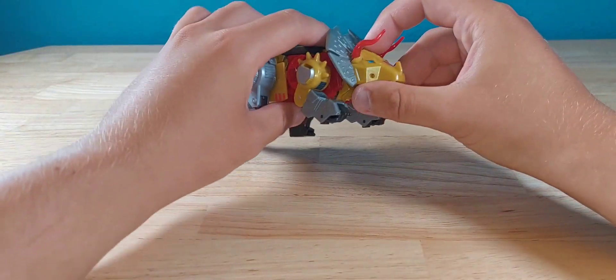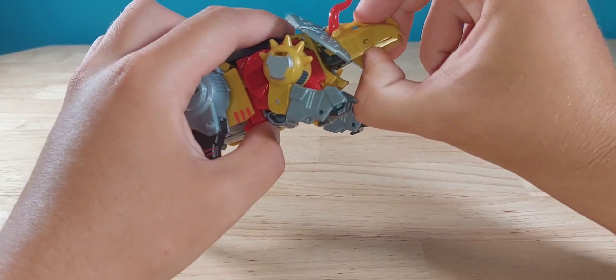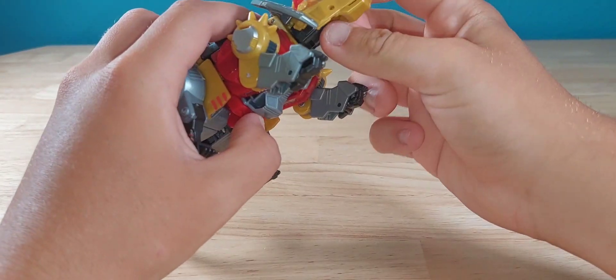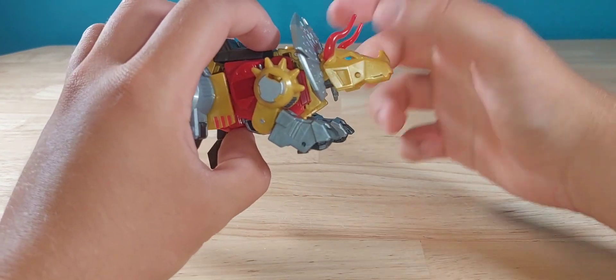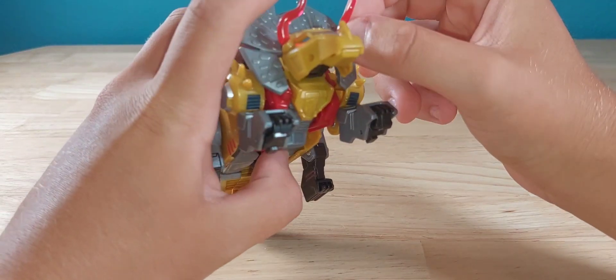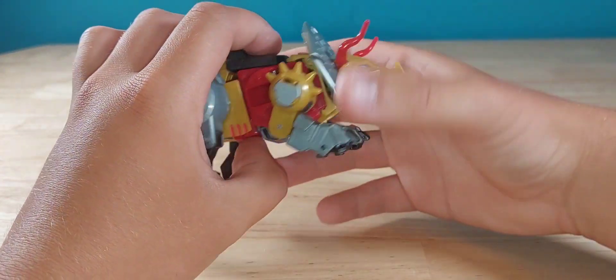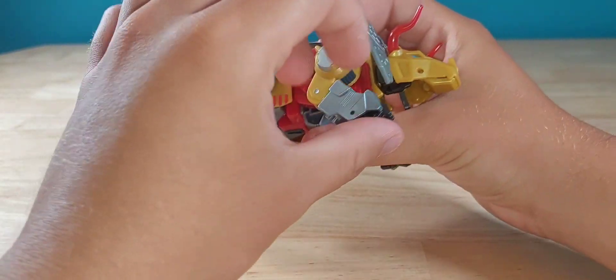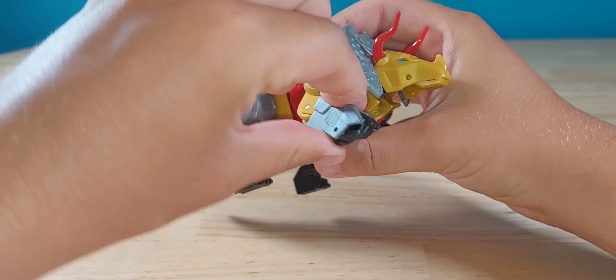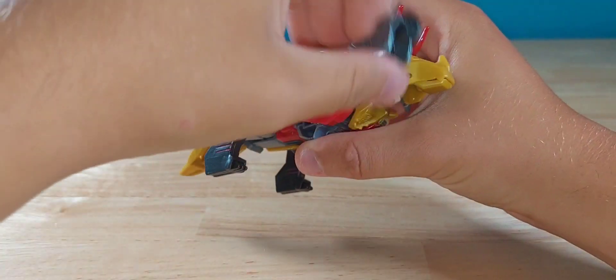Now for articulation, the head can look up and down a little bit. The mouth can open and close, they just don't give you a place to really get in there, but trust me the mouth opens and closes. The horns can move in and out if you need them to. Since these are the robot mode arms, they have elbow bend, bicep rotation, shoulders can do a full 360.